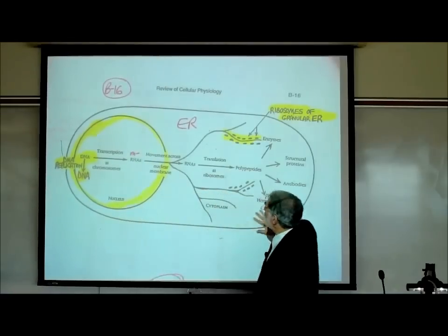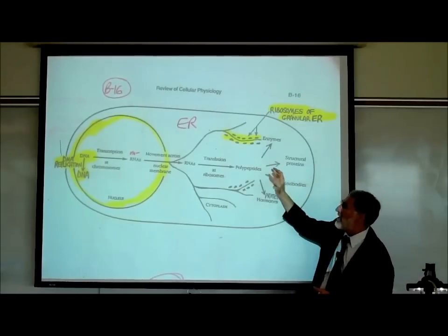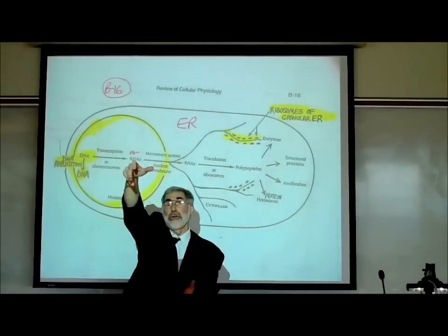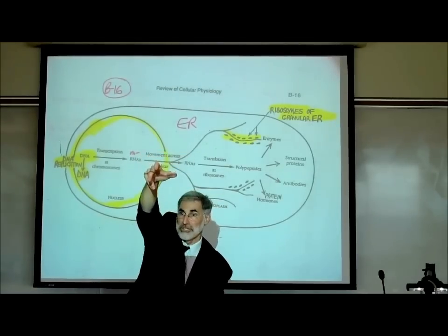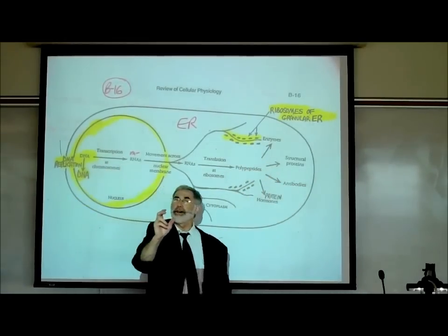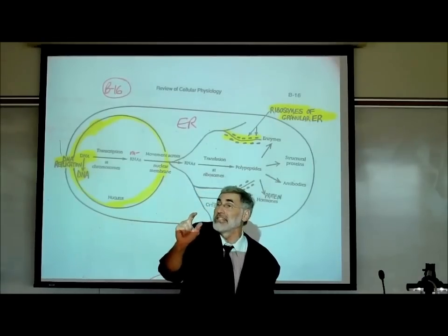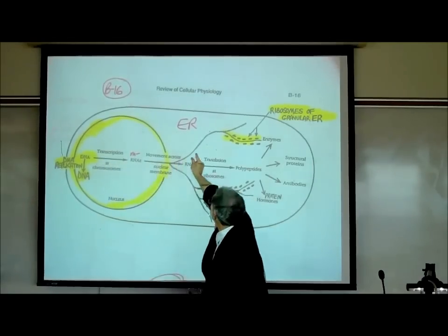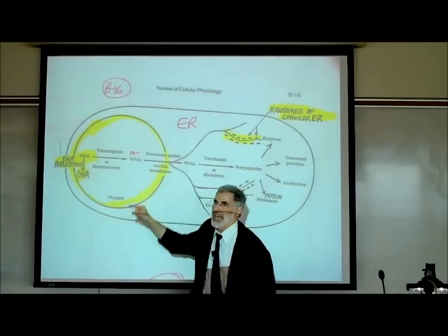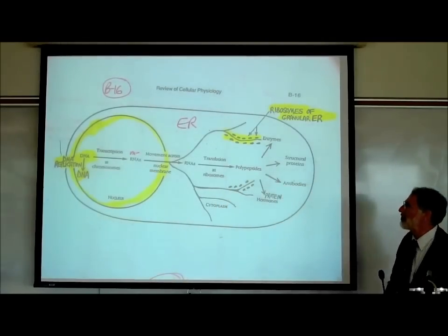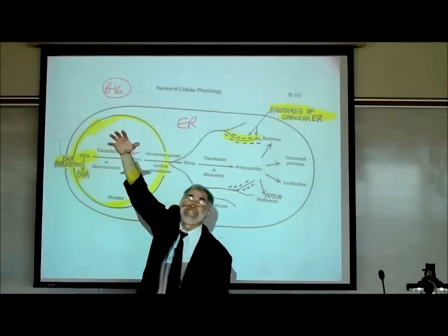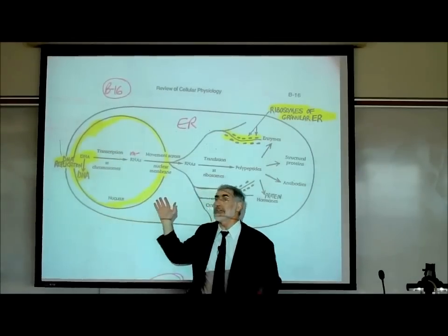Let's say this is a pancreas cell that makes insulin. It has instructions on autosome 11 for making insulin, hemoglobin, melanin, and many other proteins — but we just want to make insulin here. So what happens in the nucleus is we make a copy of just the insulin gene and send that copy out to the ribosomes. That copy of one gene is called a messenger RNA.